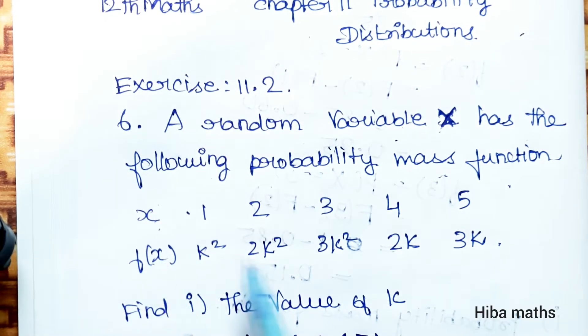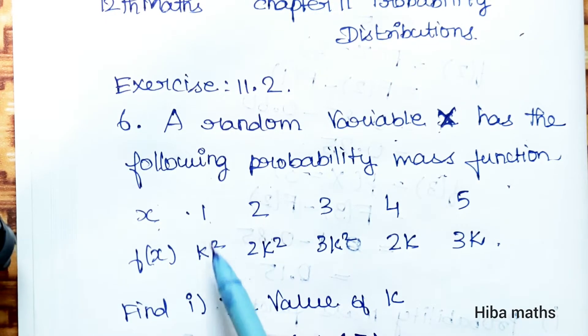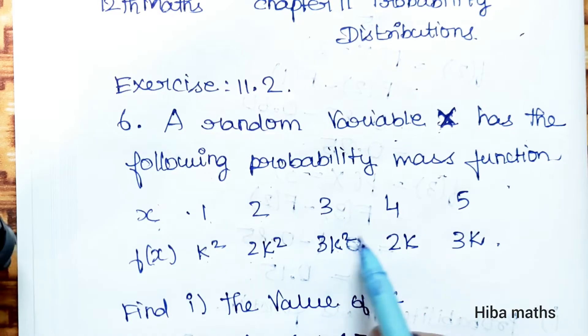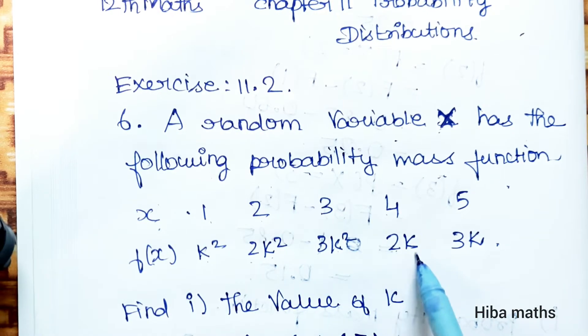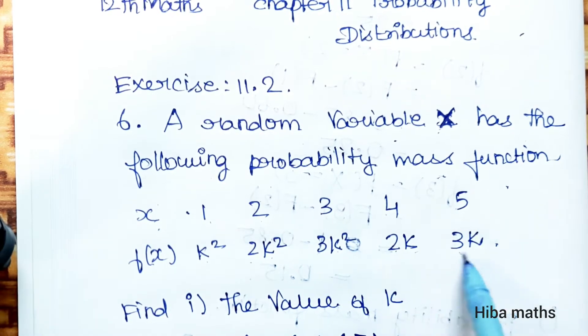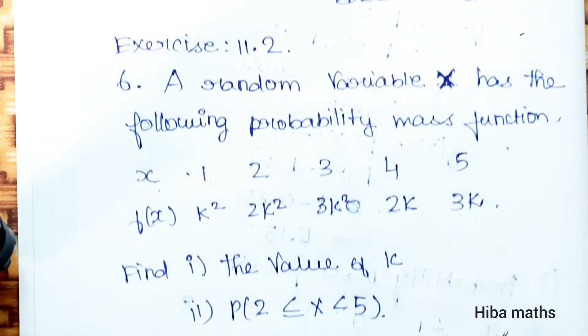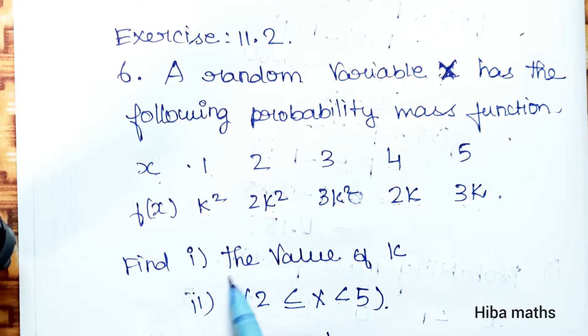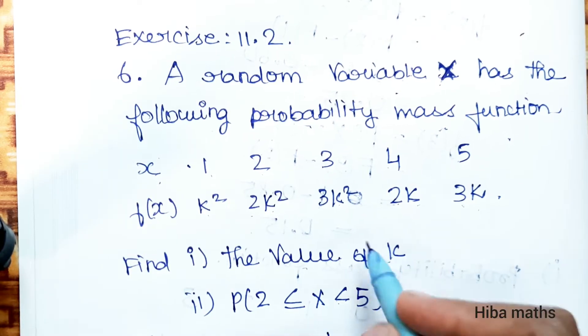The PMF values are: X=1, f(x) = k squared; X=2, f(x) = 2k squared; X=3, f(x) = 3k squared; X=4, f(x) = 2k; X=5, f(x) = 3k. Find the value of k.